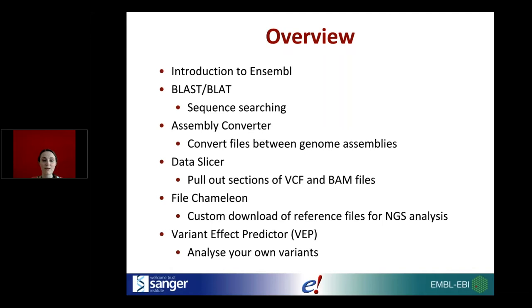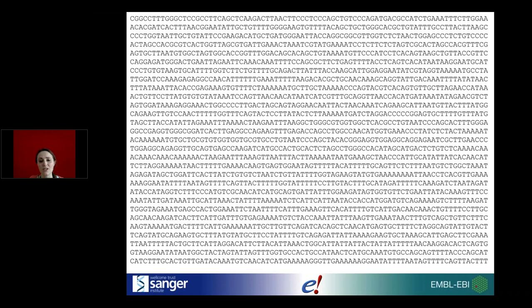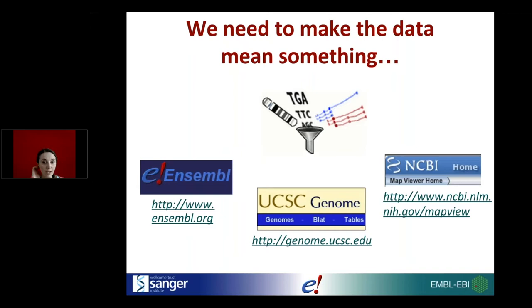Ensembl is a genome browser, and genome browsers are very useful for analyzing genomes. Genomes are large, consist of lots of data, and we're producing many more of them. When we produce a genome, we're producing just lines of A's, T's, G's, and C's which are in themselves utterly meaningless. Genome browsers work to make them meaningful. The main multi-species genome browsers are Ensembl, UCSC, and NCBI Map Viewer.